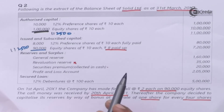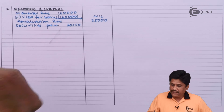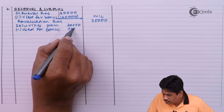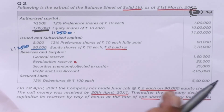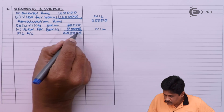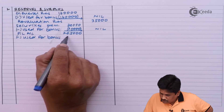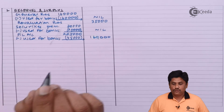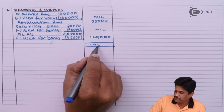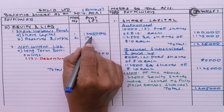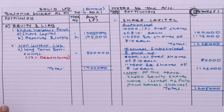Securities Premium: we were having ₹20,000 and that was entirely used for bonus, so it is also nil. P&L Account: we were having ₹2,50,000 earlier, out of which ₹45,000 was used for bonus, so P&L Account balance becomes ₹2,05,000. Overall total reserves will be ₹1,95,000 — I will put that figure in my balance sheet. The total of the balance sheet with the available figures is ₹19,00,000.